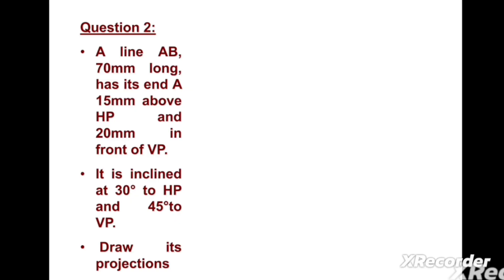It is given in the data: point A is in the first quadrant, theta angle is 30 degrees, phi angle is 45 degrees. To prepare the solution of this problem, first of all we can draw the horizontal line XY.